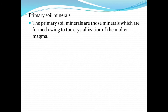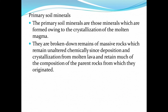The primary soil minerals are those minerals that are formed owing to crystallization of the molten magma. So these soil minerals are formed when magma solidifies. They are broken down remains of massive rocks which remain unaltered chemically since deposition and crystallization from molten lava, and retain much of the composition of the parent rocks from which they originated. So when the rocks are formed as magma or lava solidify, these minerals are then formed.